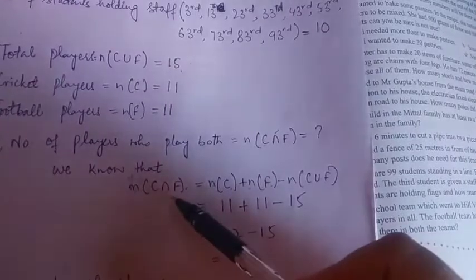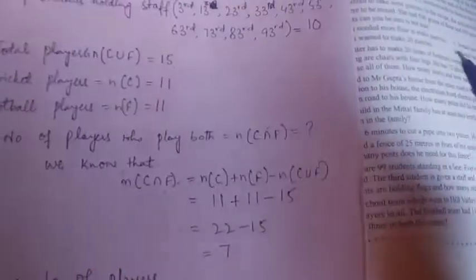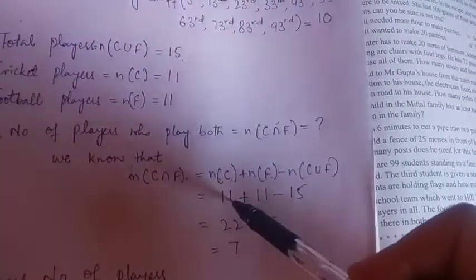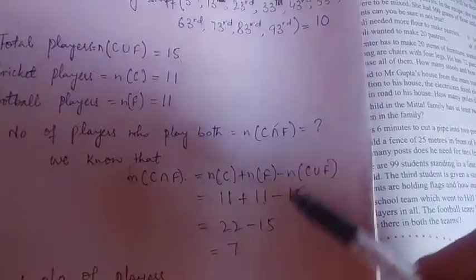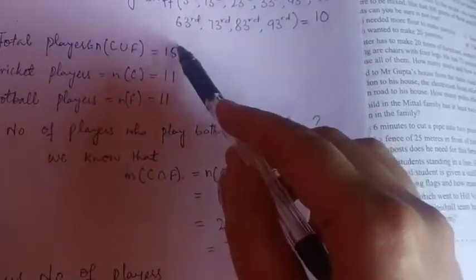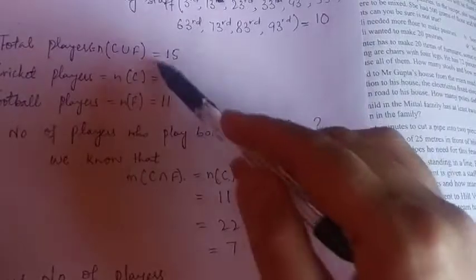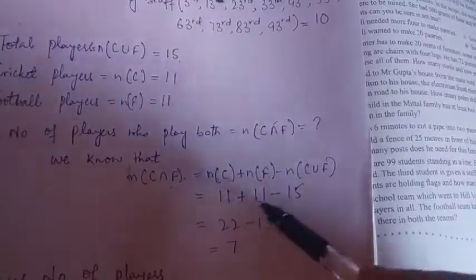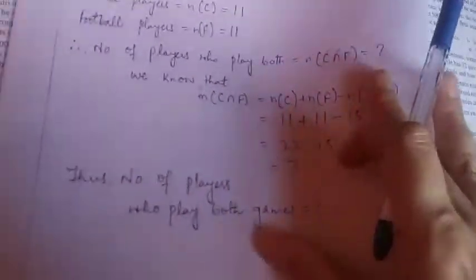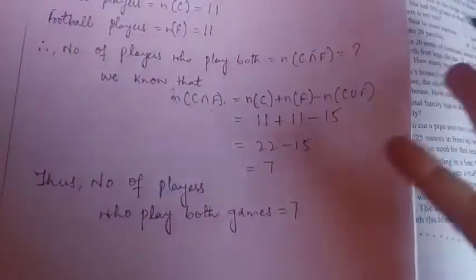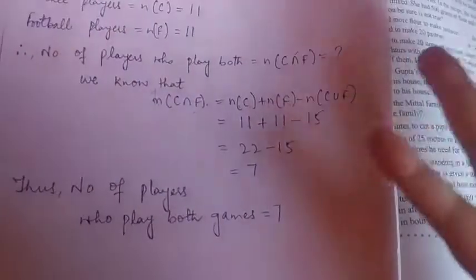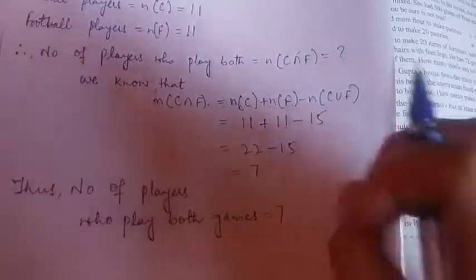Okay, so we have to find out the intersection. That will be N C that is 11 plus N F is 11 minus total students jitne hai, that is 15. So the answer is coming out to be 7. That means those students who play both games, those are 7.